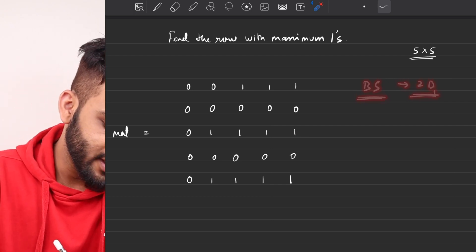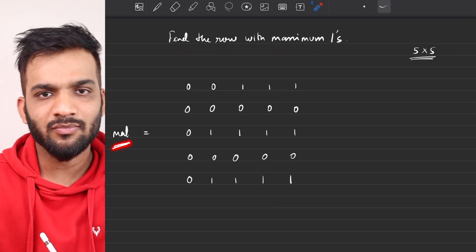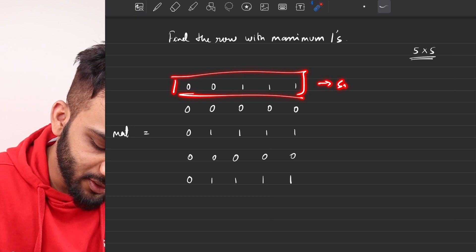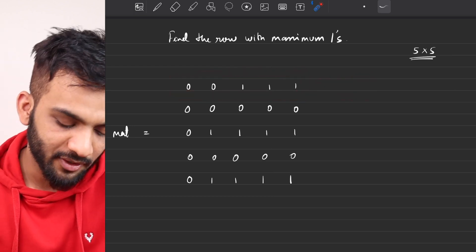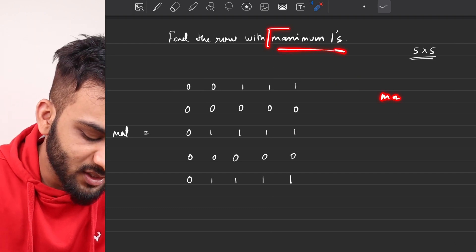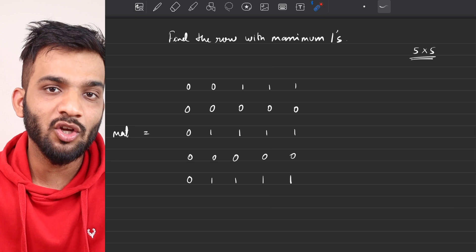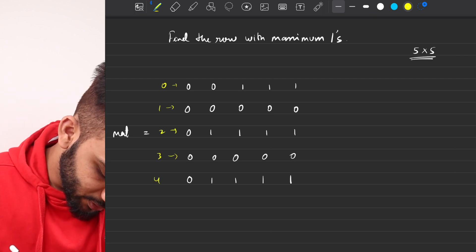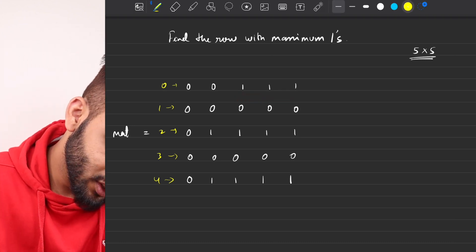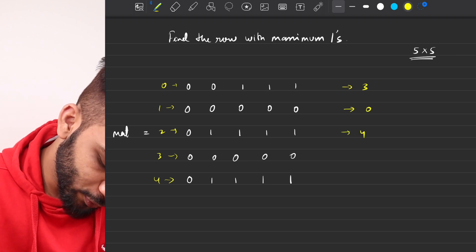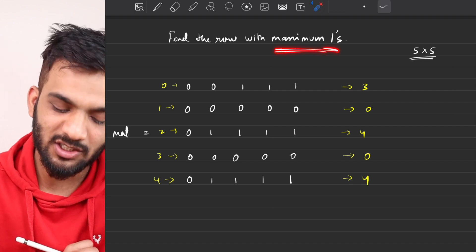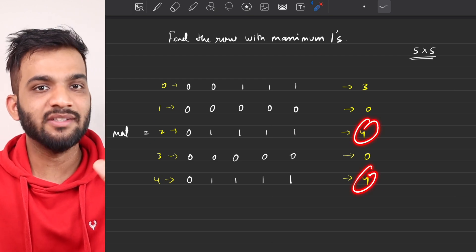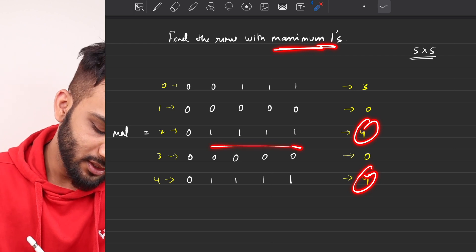The first problem we will be solving is 'Find the Row with Maximum Number of Ones.' You'll be given a 2D matrix that contains only zeros and ones, and every row of the matrix will be sorted — that's a very critical point. You have to tell which row contains the maximum ones. In case there are multiple rows with the same maximum, return the one with the smallest index.